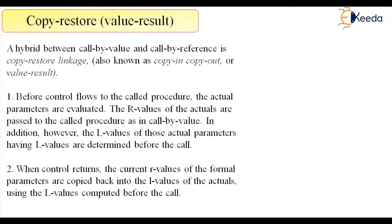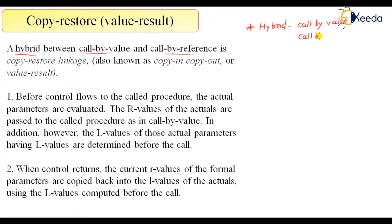Let me read out the definition and then I will explain what exactly this parameter passing mechanism does. First of all, the main term is that it is a hybrid between call by value and call by reference. So it's a hybrid algorithm — it uses some properties of call by value and some properties of call by reference.